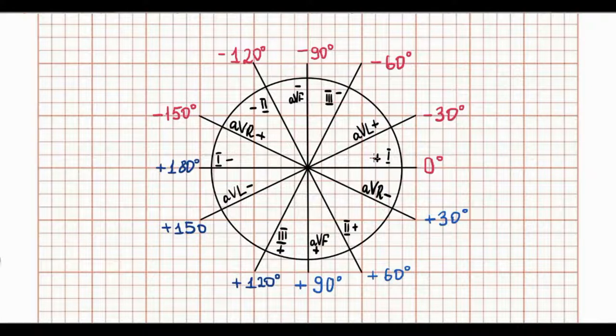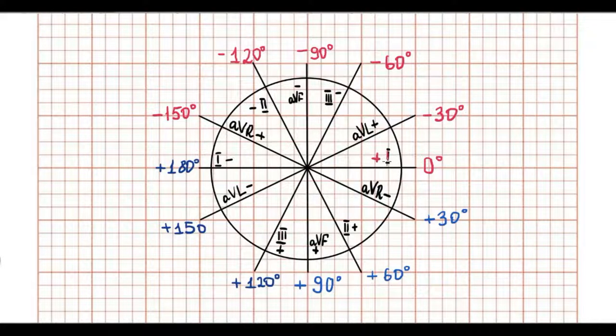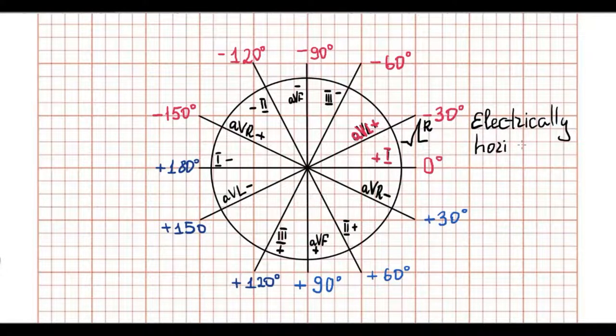When the heart is electrically horizontal, the QRS voltages are directed over to leads I and aVL. Consequently, a tall R wave, usually as part of a qR complex, is seen in these leads.